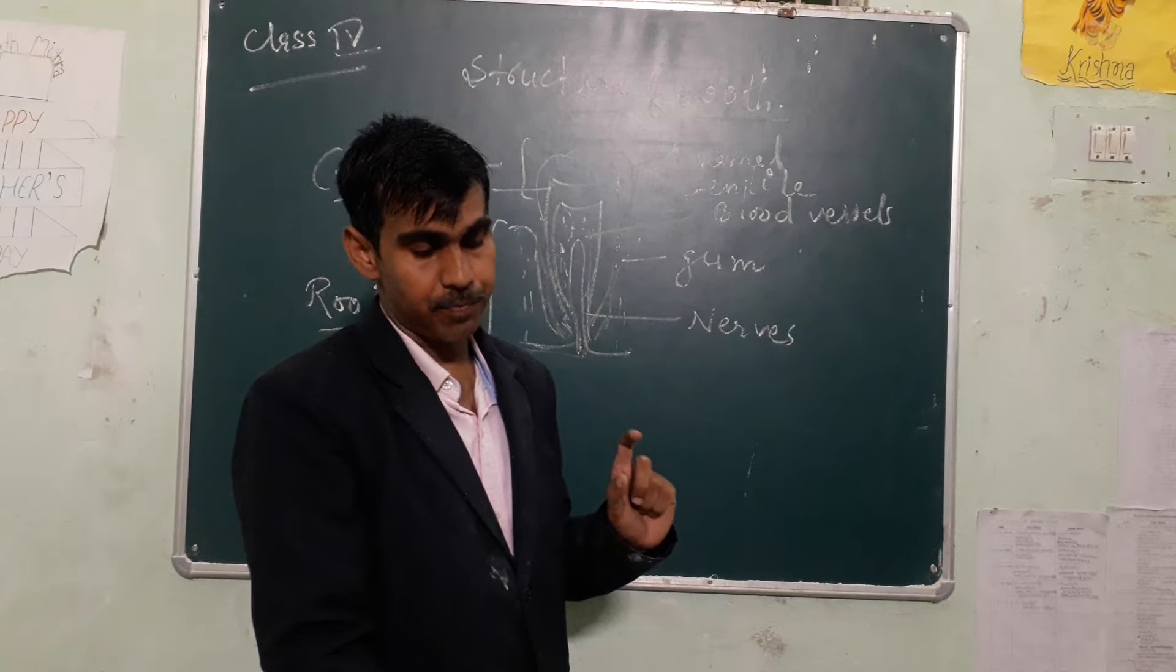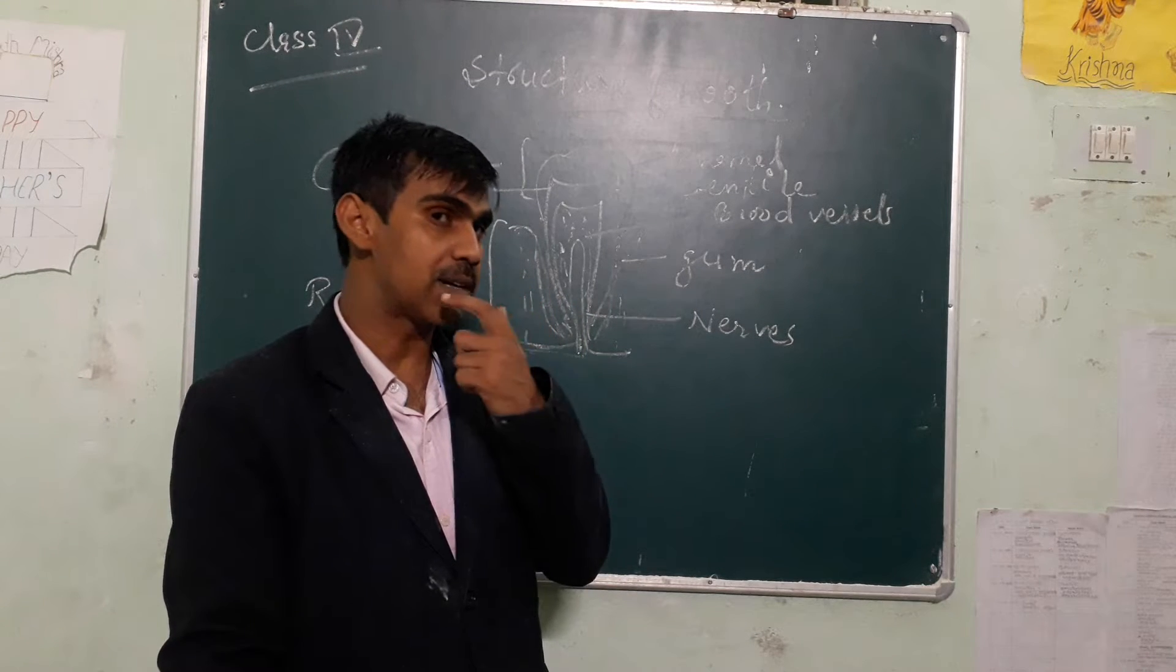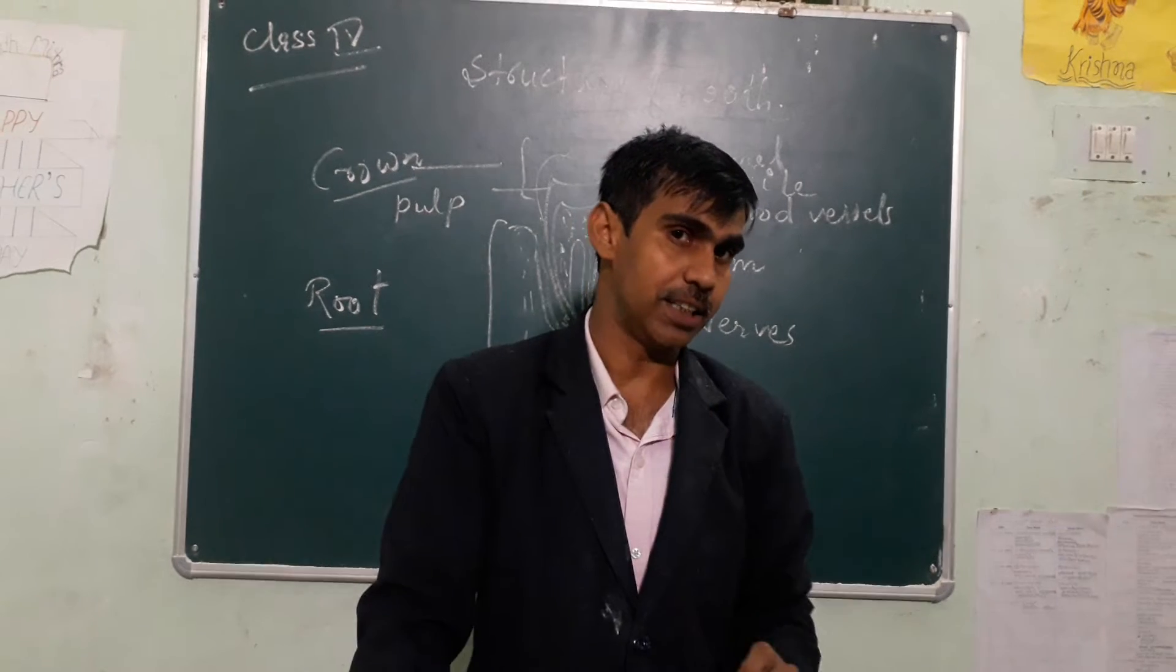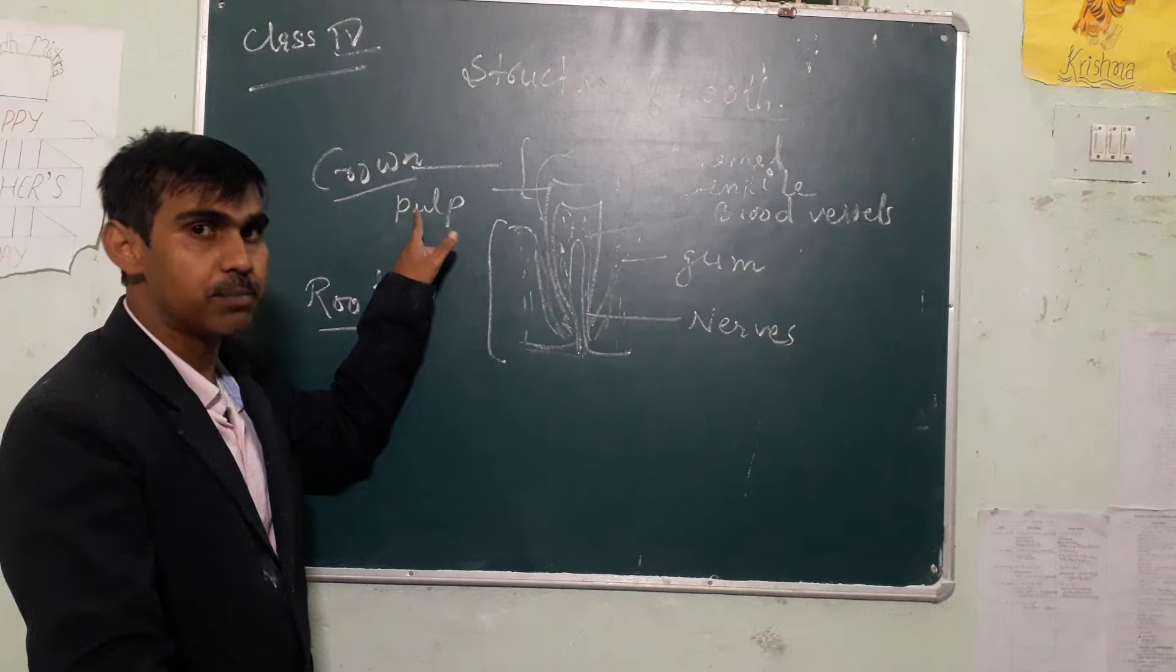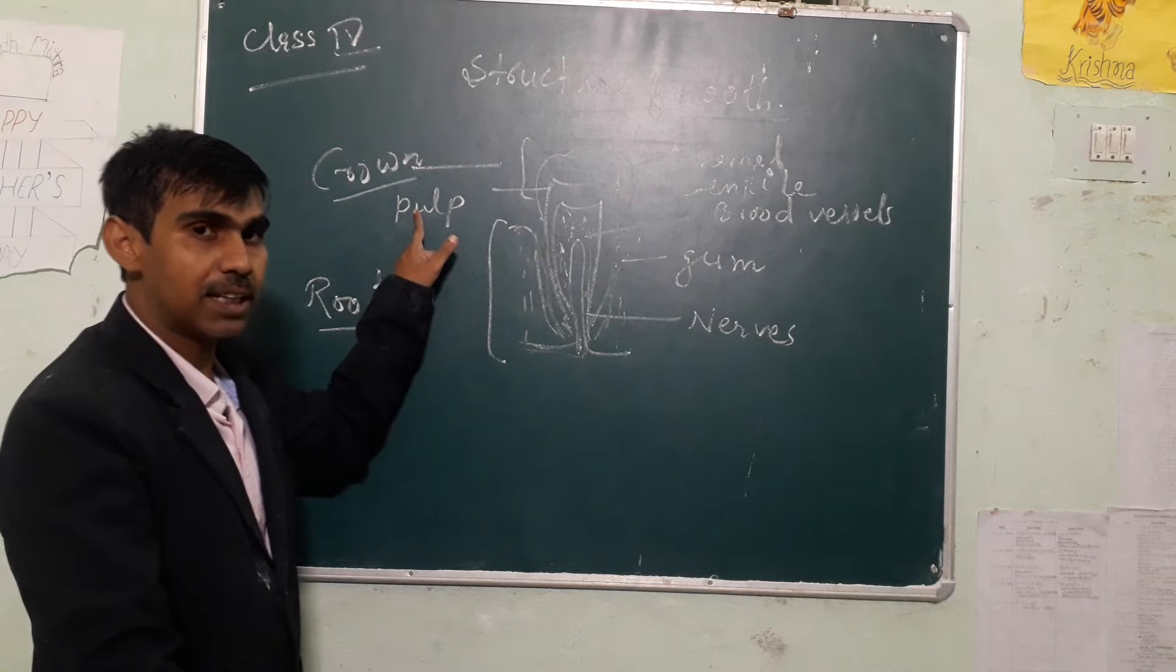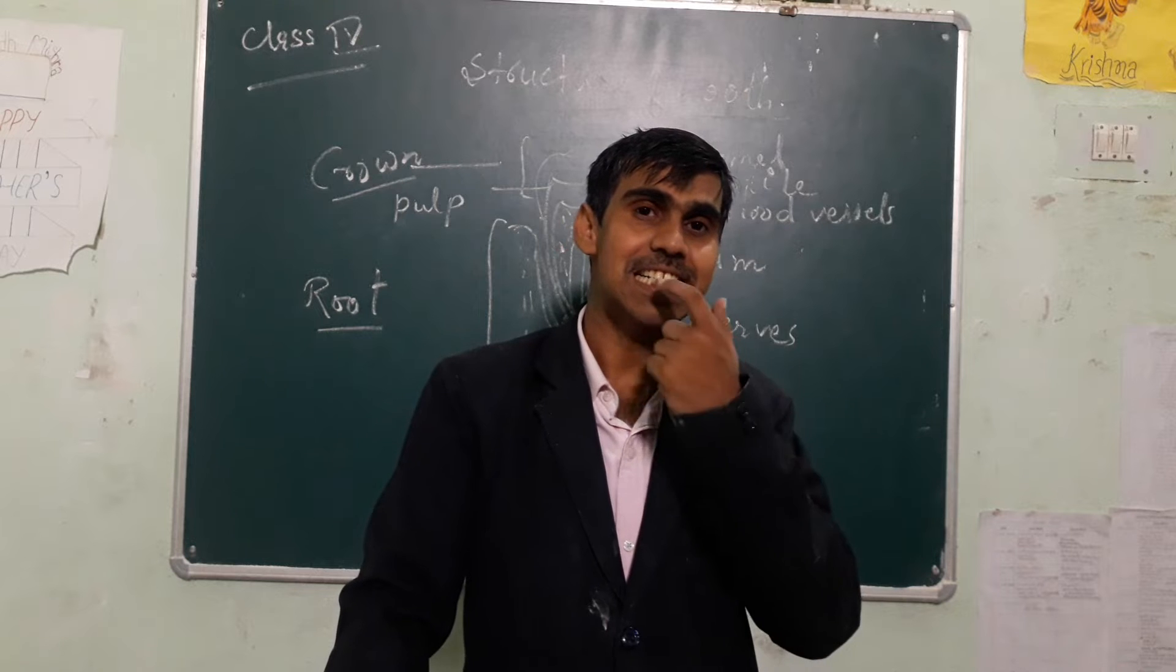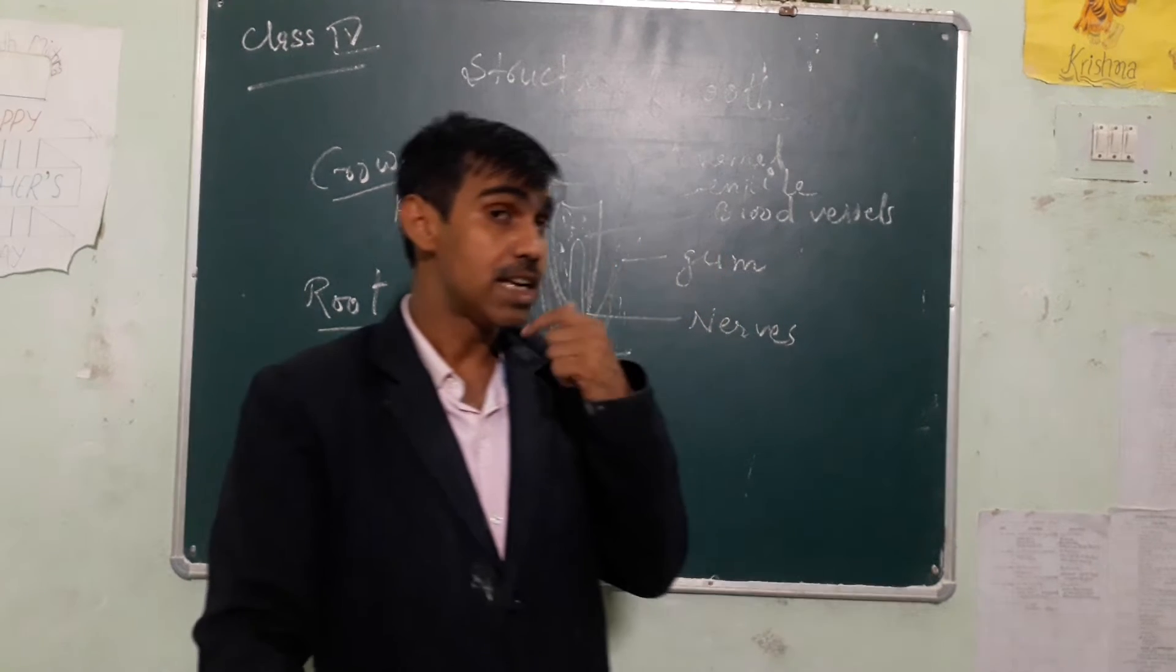The crown is the part which is visible. The part which shows above the gums is the crown. This is the part you can see when you open your mouth.